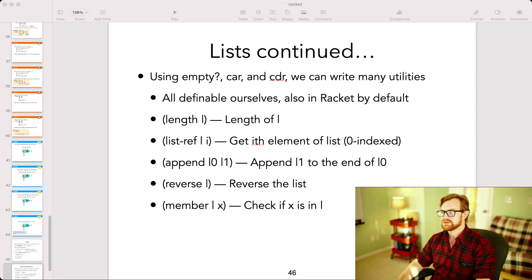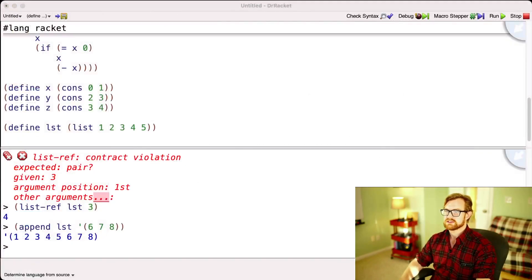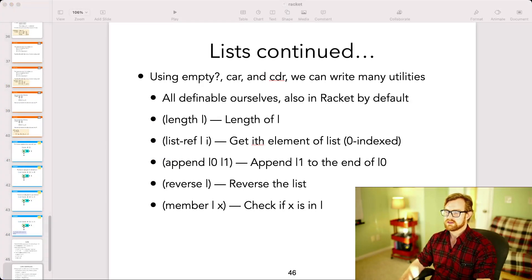Append L0 to L1 allows me to append two lists together. So I can do append of LST to 6, 7, 8. And I'll get the entire list of 1, 2, 3, 4, 5, which was LST, and then the appended 6, 7, 8.